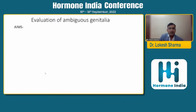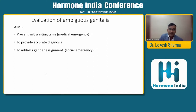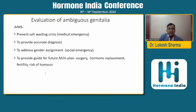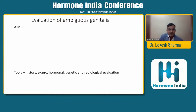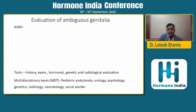How do we evaluate ambiguous genitalia? The aims of evaluation are: first, prevent salt-wasting crisis — the most important aim as it is a medical emergency. Then, provide a diagnosis and address gender assignment, because DSD is a social emergency for the family. Finally, provide a guide for future management including surgery, hormone replacement, fertility prospects, and risk of tumors. This is done through history, examination, hormonal, genetic, and radiological evaluation by a multidisciplinary team including a pediatric endocrinologist, urologist, psychologist, geneticist, radiologist, neonatologist, and social worker.